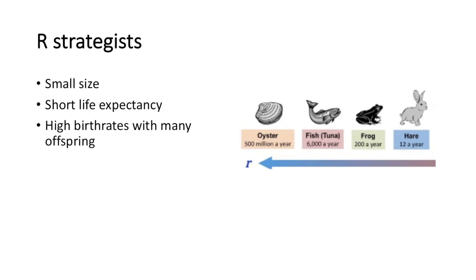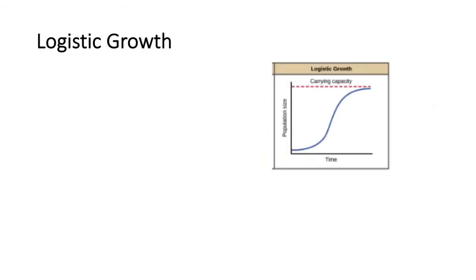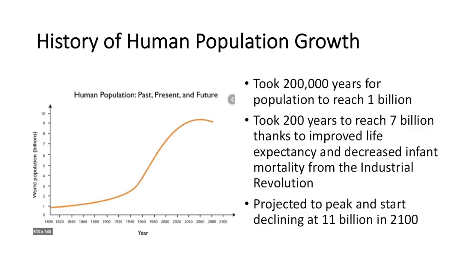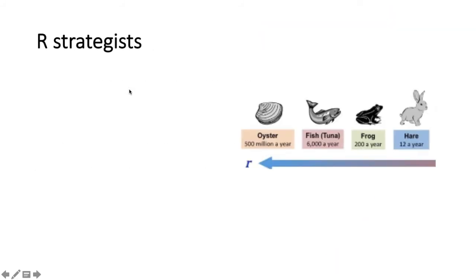Another thing you'll notice is that R-strategists tend to have a small size. Now, if we go back to the human population growth graph, we'll notice it seemed to have exponential growth all the way until it leveled off. We're expected to have a peak and then a decline, so we're not completely following the exponential growth model.